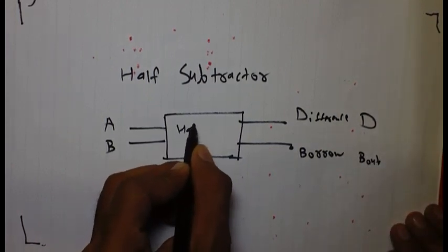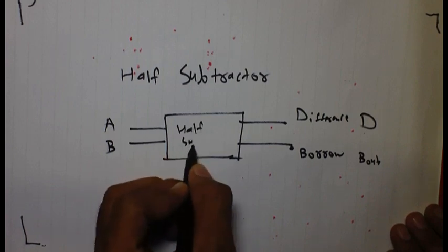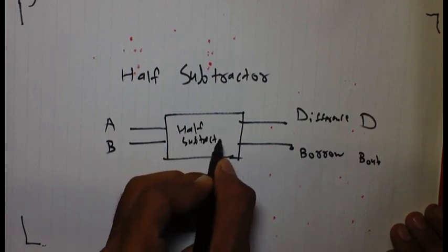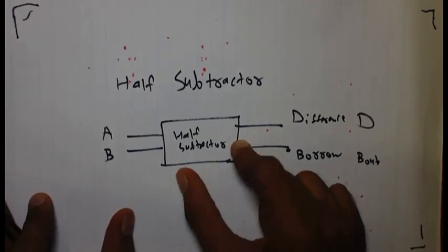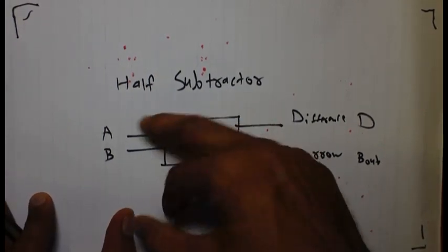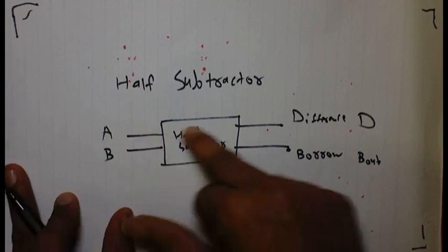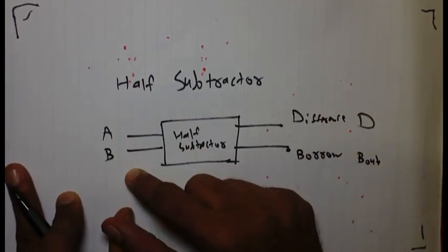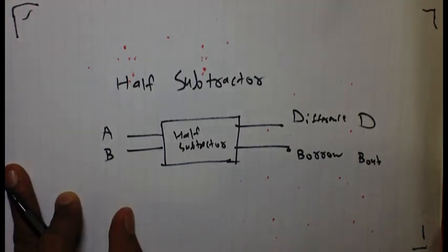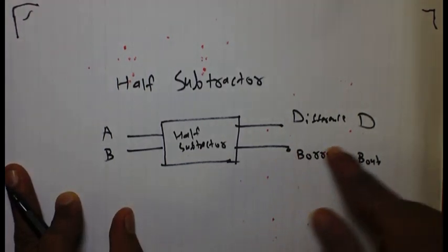This is our subtractor. So this machine performs basic subtraction A minus B. The difference will be calculated here. If B is greater then we require to take borrow from another. It will be required here.